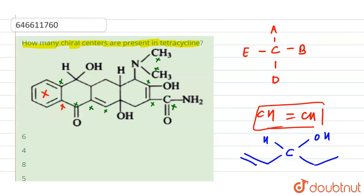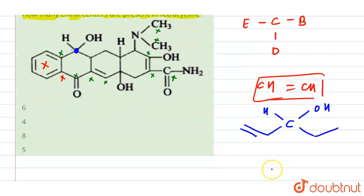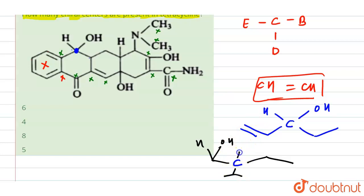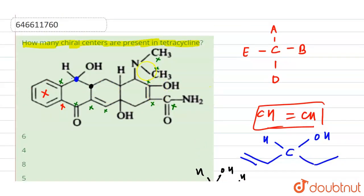Now for this next carbon: here we have this chain, here we have the attachment of OH, on this side we have a different chain going on, on another side there is different branching, and one substituent will be hydrogen. Since all four are different, this is also our chiral carbon — that's two chiral carbons.